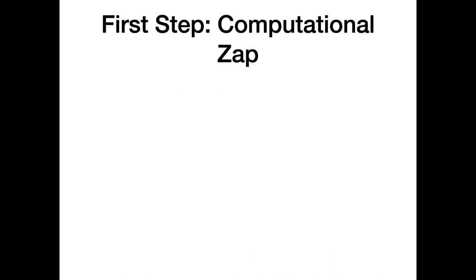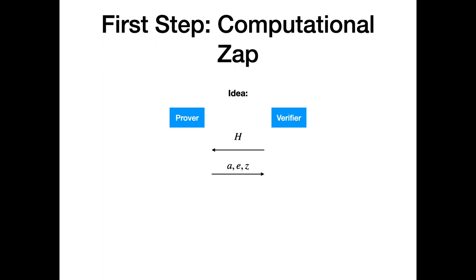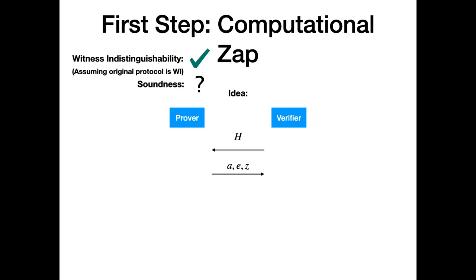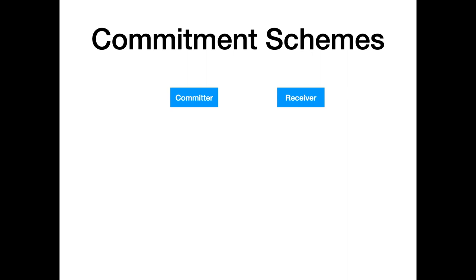Now I'll talk about how we build on these techniques to get statistical zaps. As a first step, let's try constructing a computational zap. Given the NIZK construction, a natural idea to turn it into a two-round protocol without a CRS is to have the verifier choose the hash function h, and then have the prover send the computed transcript. To talk about soundness, I need to introduce commitment schemes.